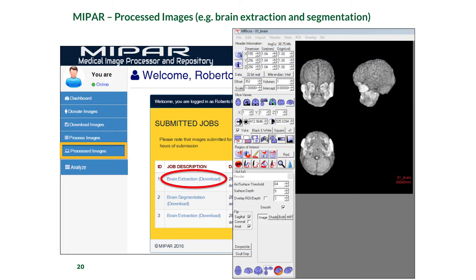This shows the output of brain extraction — the non-brain tissue has been removed and the skull is gone. We didn't develop the brain extraction tool ourselves; it is available from Oxford University, called FSL. We put FSL at the back end and wrote code to make it available on MIPA. Note that this particular brain extraction is not fully clean, as the eyes are still present — normally we want to remove them when processing brain images.